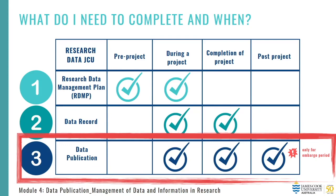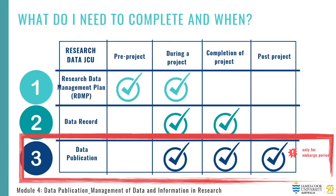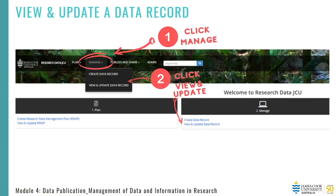Any projects commencing from 2021 onwards require a research data record and data publication. For example, if you are a HDR candidate and in 2021 are already part way through your research project, a data record and data publication is required, but you are not required to retrospectively complete a research data management plan. The added bonus of linking your data publication from your data record is that some of the fields will be auto-populated, saving you entry time.